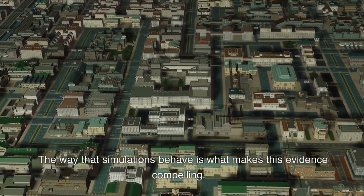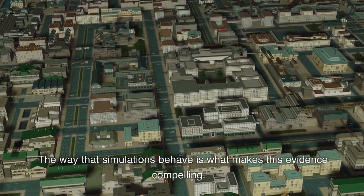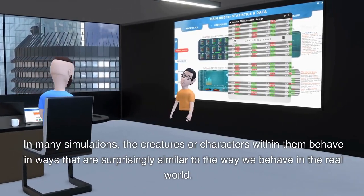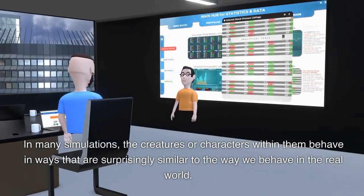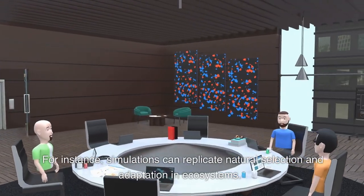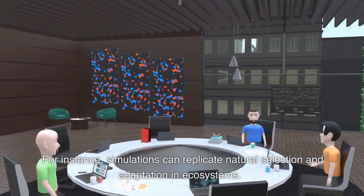The way that simulations behave is what makes this evidence compelling. In many simulations, the creatures or characters within them behave in ways that are surprisingly similar to the way we behave in the real world. For instance, simulations can replicate natural selection and adaptation in ecosystems.